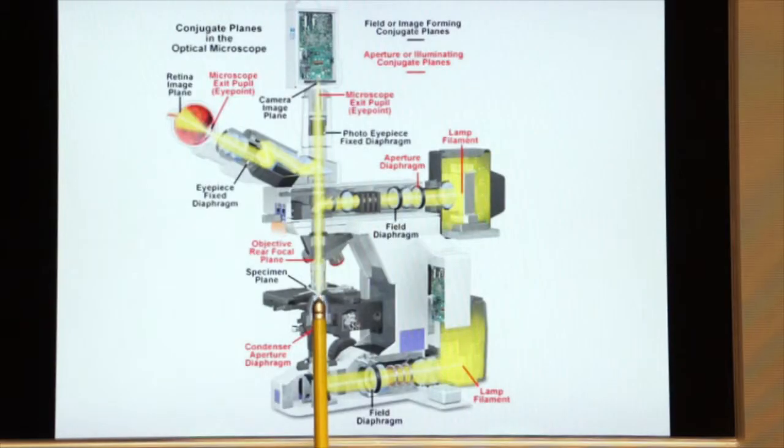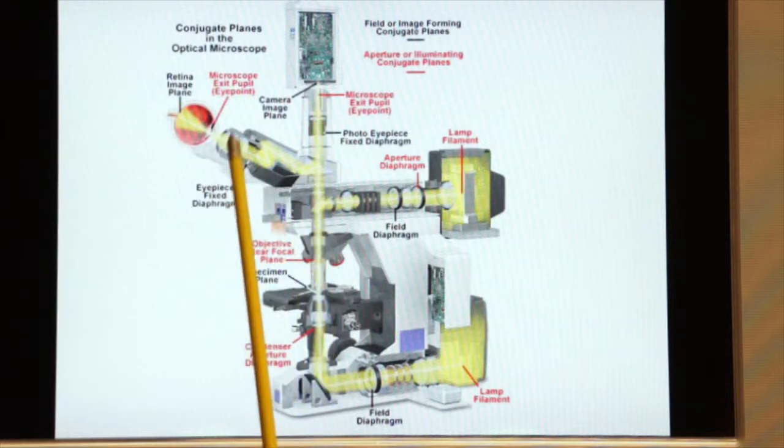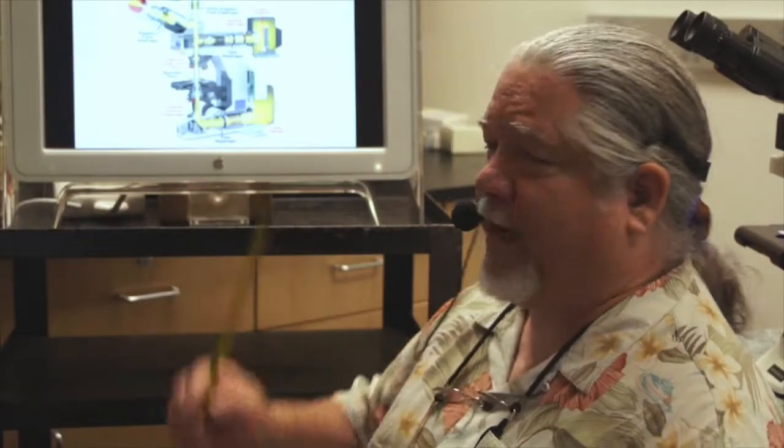Now the light that is emitted from our specimen travels through the objective, through the nose piece, through the mirror, and up into the trinocular tube where the observer can see it, or we can record it on film. That's reflected light fluorescence microscopy.